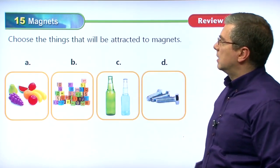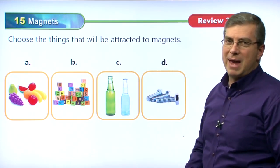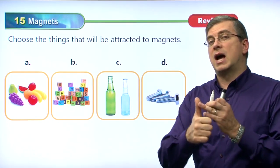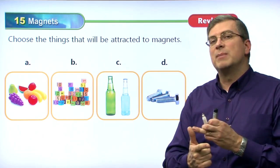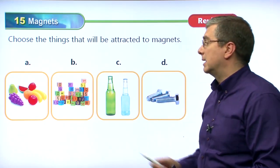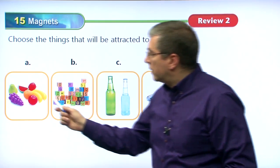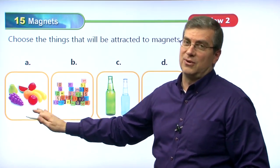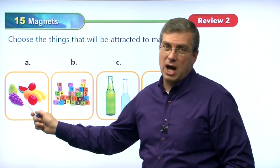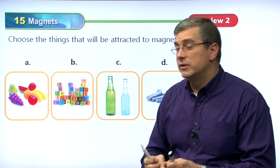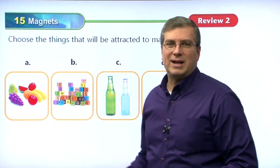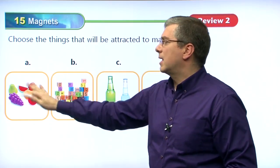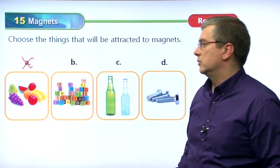Now we have a quiz: choose the things that will be attracted to magnets. Remember, if the thing has iron or steel in it, it will be attracted. Over here we have fruit — grapes, pear, bananas. Whether real fruit or plastic fruit, they will not be attracted to a magnet because they don't have any iron in them. So no, they will not be attracted. What about these? These are blocks — wooden blocks, like building blocks with alphabet letters. Wood is not attracted by magnets, so magnets will not attract these.